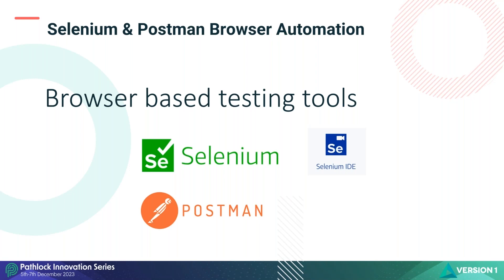How do we automate that? How do we synthetically simulate what the support analyst has just done? There are a number of tools we could use. I'm using Selenium. Selenium is a browser-based testing tool, and we can use it to synthesize the login process and test it. We could also use Postman. These two tools just happen to be supported by OCI in their synthetic monitoring framework. I could equally use Python or PhantomJS, though that open source community faded when Selenium introduced a headless browser in Chrome and Edge.